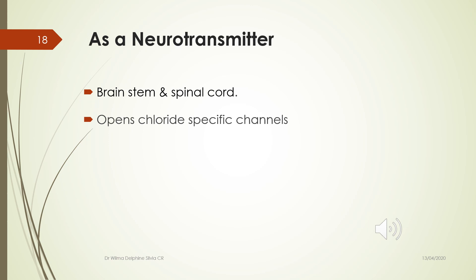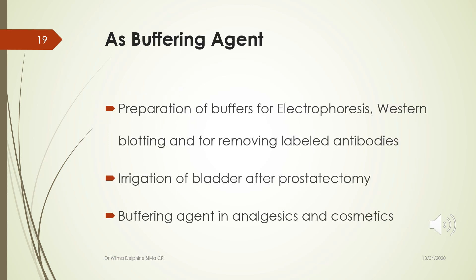Glycine acts as a neurotransmitter in the brainstem and spinal cord by opening chloride-specific channels. At moderate levels it acts as an inhibitory neurotransmitter, but at high levels it causes overexcitation. Glycine is also used in preparation of buffers in techniques like electrophoresis, western blotting, and removal of labelled antibodies; it is used in bladder irrigation after prostate removal, and as a buffering agent in analgesics and cosmetics.